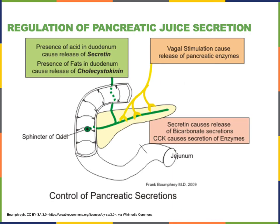The secretion of pancreatic juice is under both neural as well as endocrine control. The parasympathetic division of the autonomic nervous system stimulates the secretion of pancreatic juice. Parasympathetic efferent fibers travel through cranial nerve number 10, the vagus nerve, to reach the pancreas and release the neurotransmitter acetylcholine to stimulate the secretion of pancreatic juice.